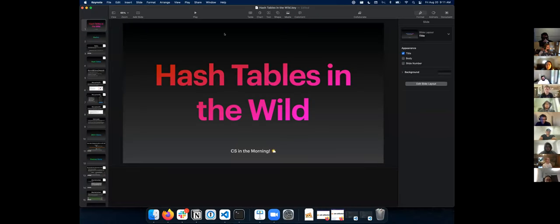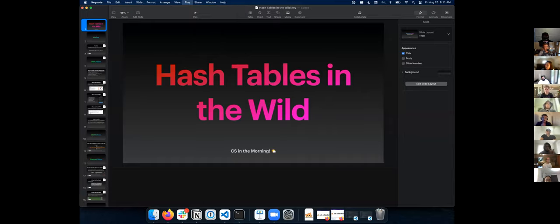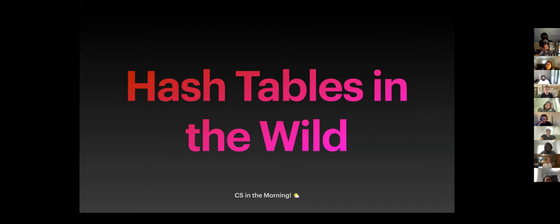This is by far the most interesting CS lecture, because we actually start seeing how some of this stuff plays out in the real world. A lot of what we've been talking about the last few days has been theoretical — like designing your algorithms to use O(1) or O(n) is going to be better than a quadratic function. And what you're going to see today is a real reflection of why this stuff is important and how it impacts your users and business interests.